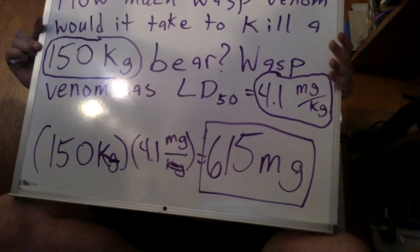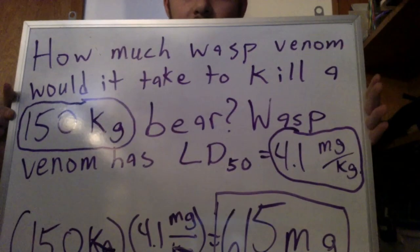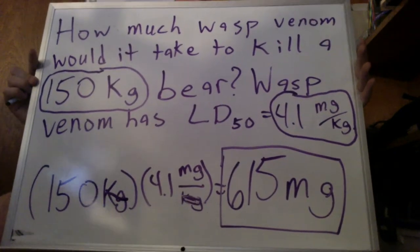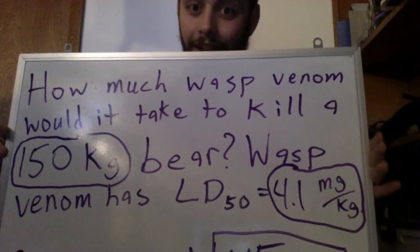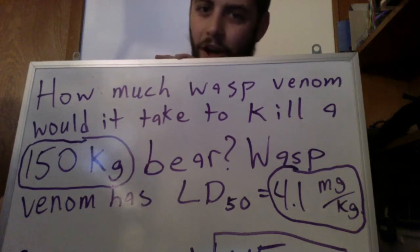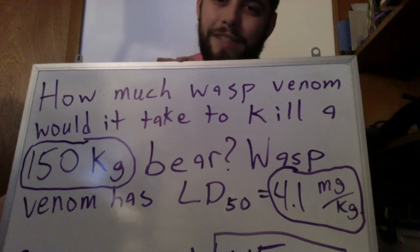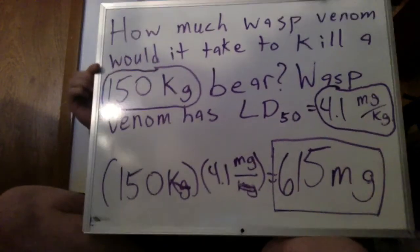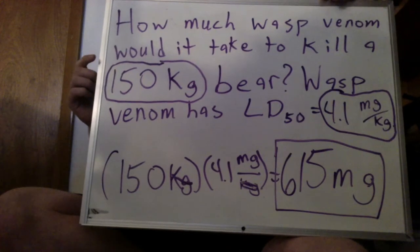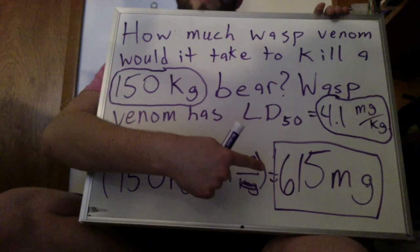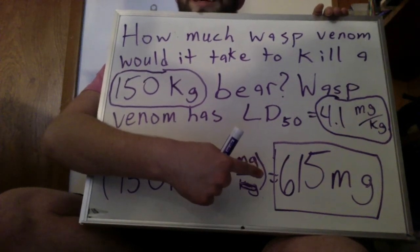So the final answer: how much wasp venom would it take to kill a 150 kg bear? About 615 milligrams. That's actually quite a lot of wasp venom — a bear would have to be stung by something like a thousand wasps all at once. A single wasp is not going to be able to kill a bear by itself. Wasp venom is not potent enough to take down a 150 kg bear unless you've got 615 milligrams of it.